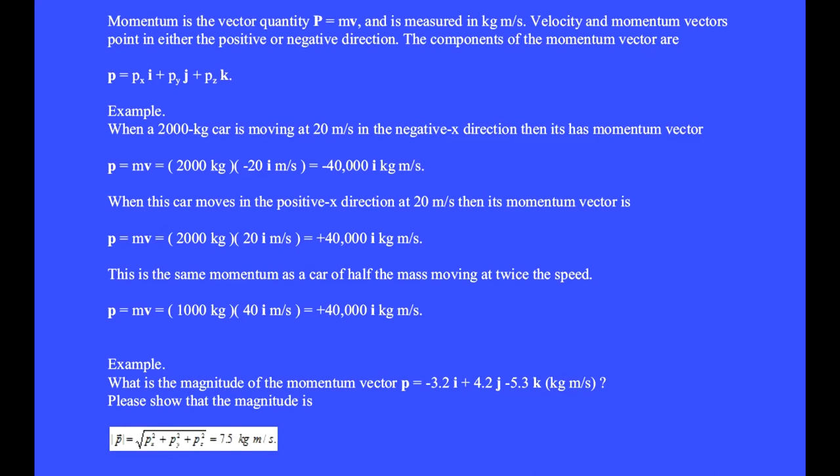When this car moves in the positive x direction at 20 meters per second, then its momentum vector is positive 40,000 i-hat kilogram meters per second. This is the same momentum as a car of half the mass moving at twice the speed.